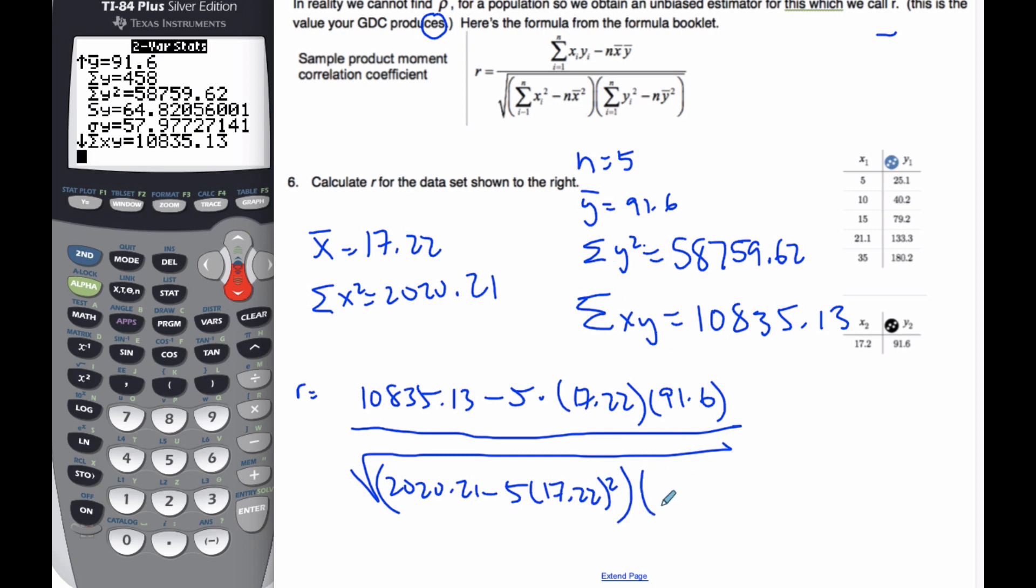times 58759.62, which is the y squared, minus 5 times the 91.6 squared. And when I do that big giant calculation,